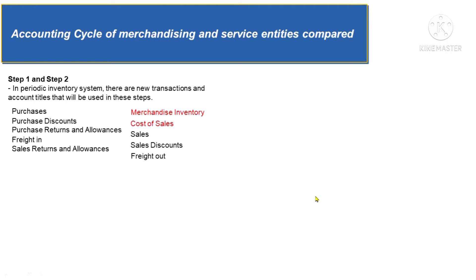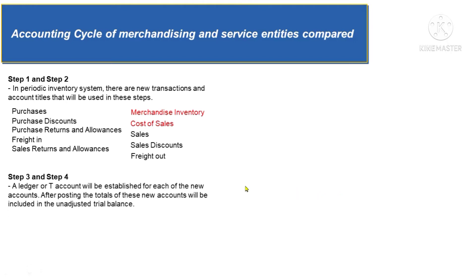In step 3, which is posting journal entries to the ledger or T-account, in merchandise entities you just need to make a T-account or ledger for each of these accounts. After all postings, get the total of each account to prepare the unadjusted trial balance, which is step 4 of the accounting cycle.